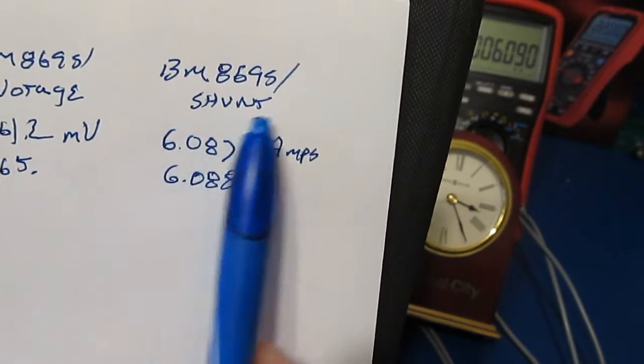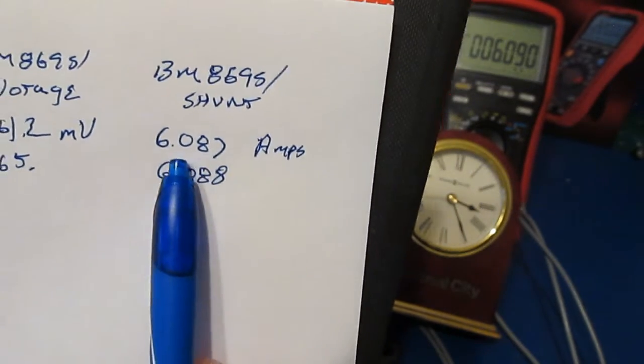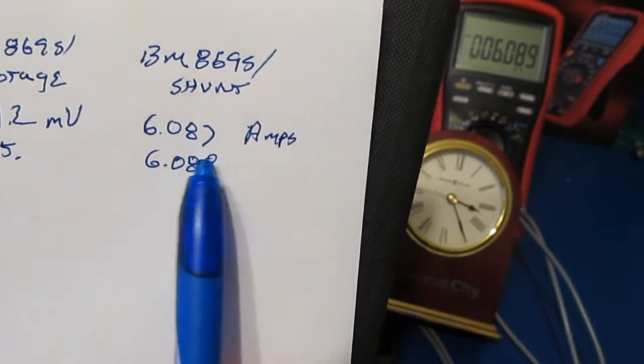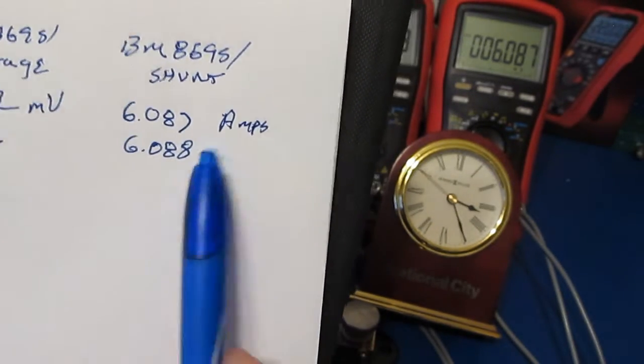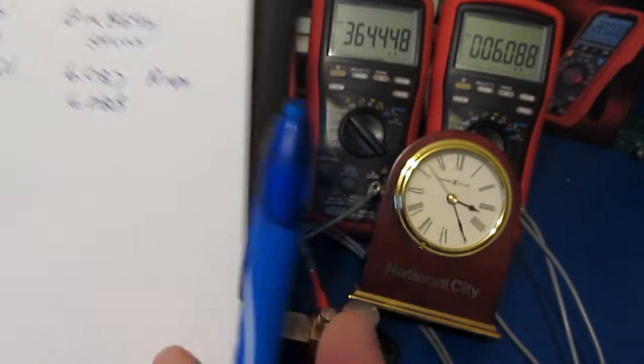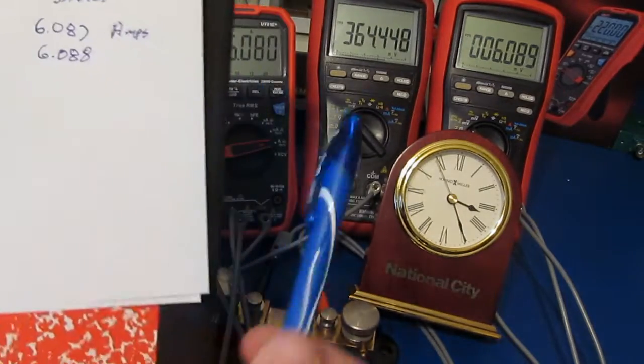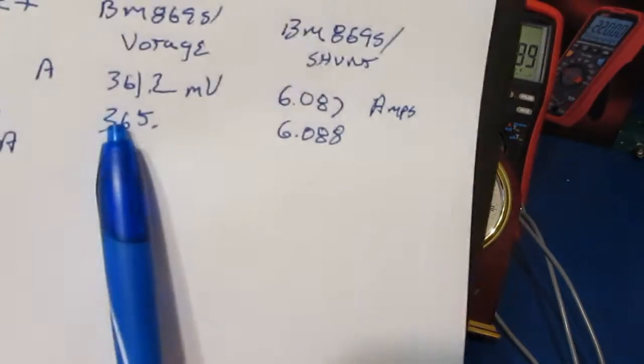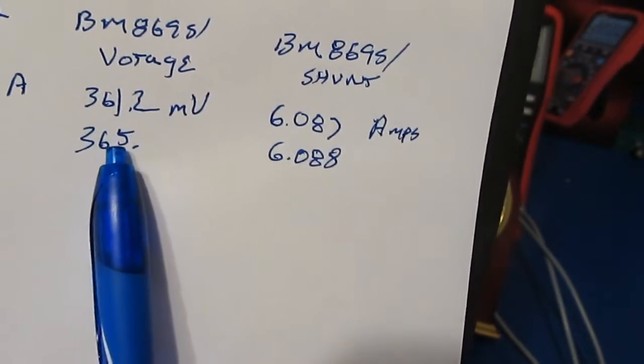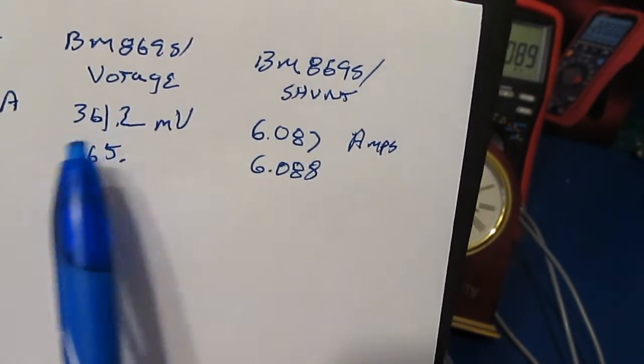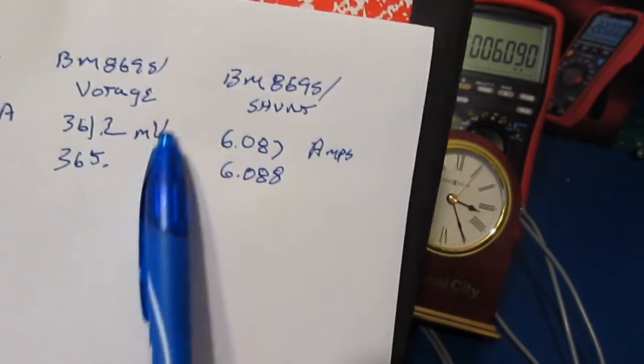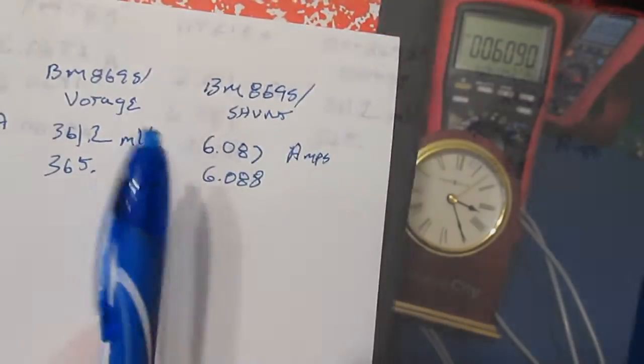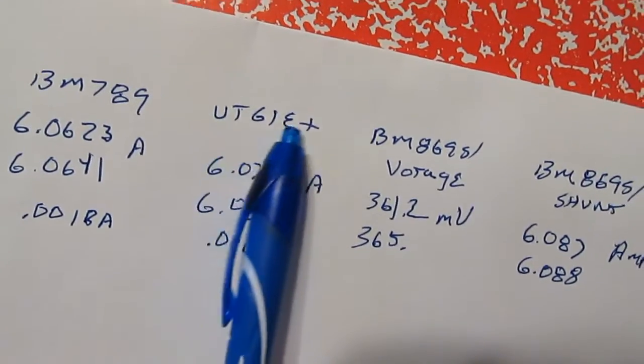First, if we look at the Bremen BM 869s along with our current shunt, it's gone from 6.087 to 6.088 amps, so basically it's gone up one count. If we look at the voltage across the system, it's gone up just a little bit as well, from 361 to 365 millivolts. This is looking essentially at the output of the power supply.